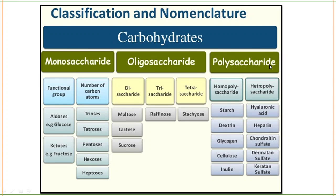Next is polysaccharides — more than 10 units of monosaccharides. It can be a homopolysaccharide, where homo means same — all monosaccharide units are the same, for example 50 units of glucose. Examples: starch, dextrin, glycogen, cellulose, and inulin. Heteropolysaccharide has different units of monosaccharides. Examples: hyaluronic acid, heparin, chondroitin sulfate, dermatan sulfate, and keratan sulfate.